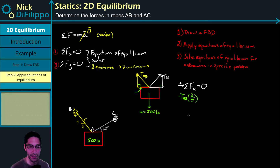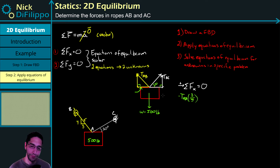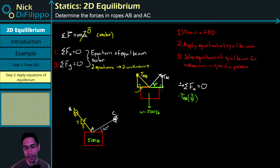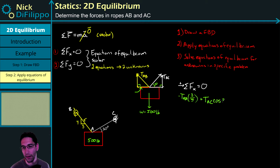Now looking at the sum of forces in the y direction, equal to zero, with up as positive. TAB points upward, so it contributes +TAB × (4/5). TAC also points upward, contributing +TAC × sin(30). The 500-pound weight points downward, so it's −500. That gives us: TAB(4/5) + TAC·sin(30) − 500 = 0.